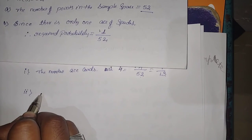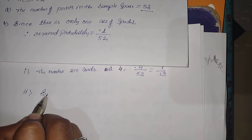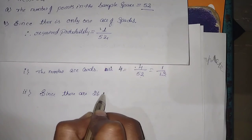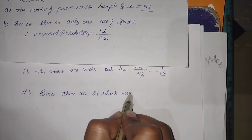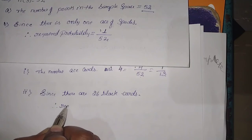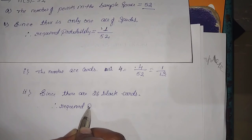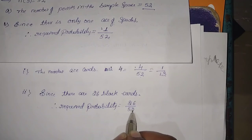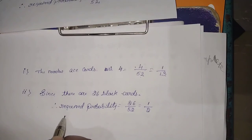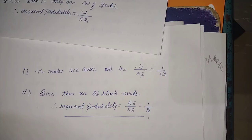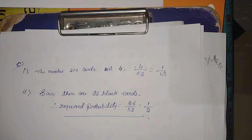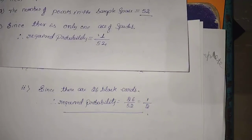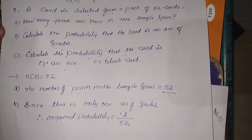For black cards: there are 26 black cards out of 52 playing cards. The required probability = 26/52 = 1/2. This completes the solutions for this problem. Please make note of these — understanding the problem first is most important.